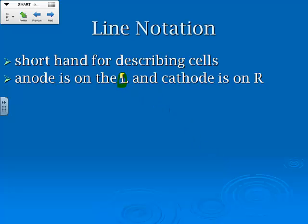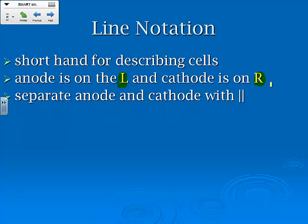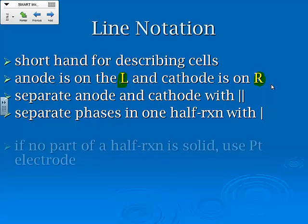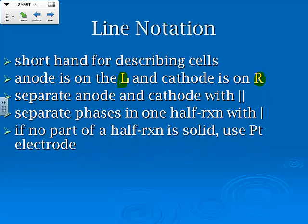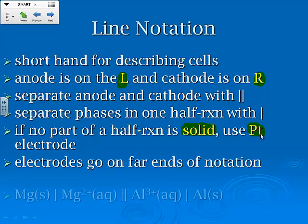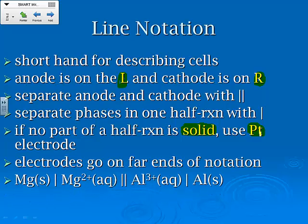Now, line notation is a shorthand for describing cells. We're going to put the anode on the left, the cathode's going to be on the right. And we separate the anode and cathode with this double line. We separate phases and one half of reaction with a single line. And if there's no part of the half reaction that's solid, then we supplement in that platinum electrode like we saw us do for the hydrogen. And the electrons go on the far ends of the notation.